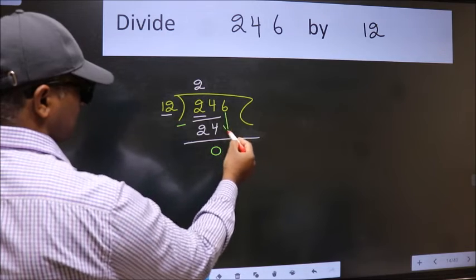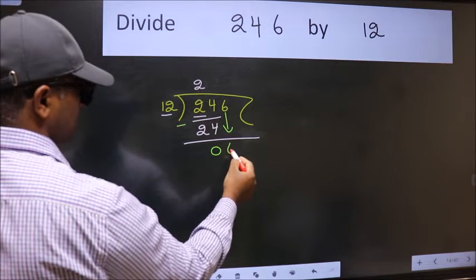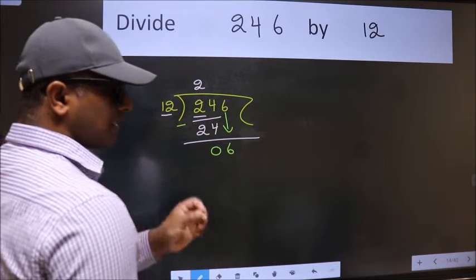After this, bring down the next number. So 6 down. After this step, the mistake happens.